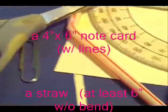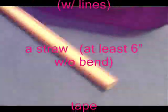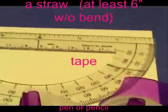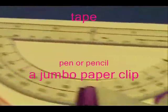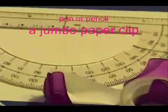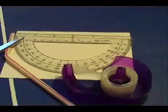Scissors, paper, straw, tape, protractor, and note card are all you should need to draw your sextant.